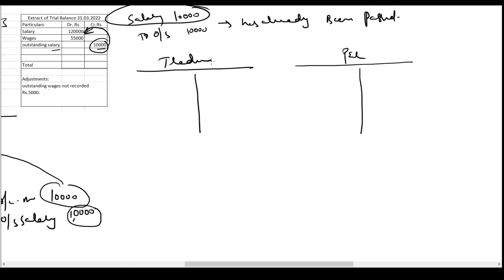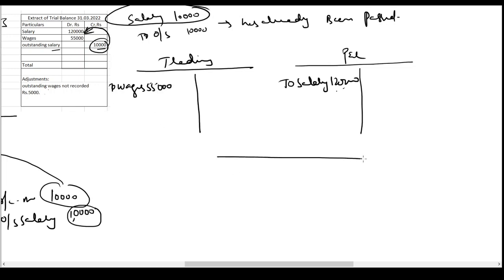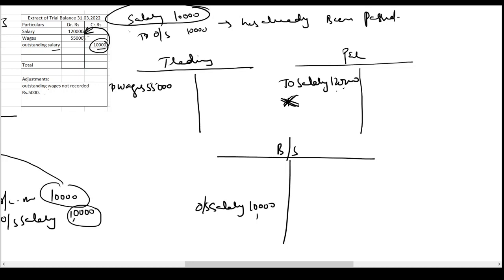In the trading account and P&L: salary is debited to the P&L account — 1,20,000; wages are debited to the trading account — 55,000 in the inner column. Outstanding salary 10,000 is shown directly in the balance sheet. We do not add it again because it already appears in the trial balance, meaning the entry was already passed and the expense has already been recognized.